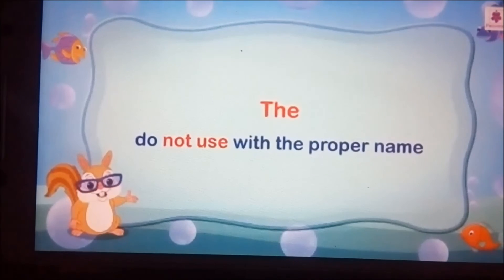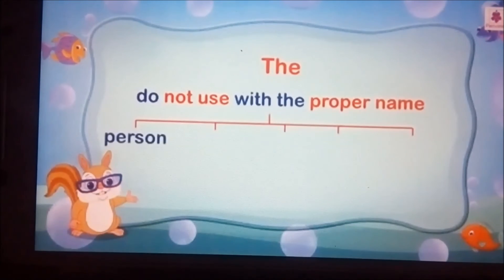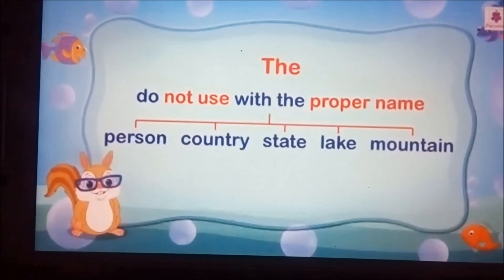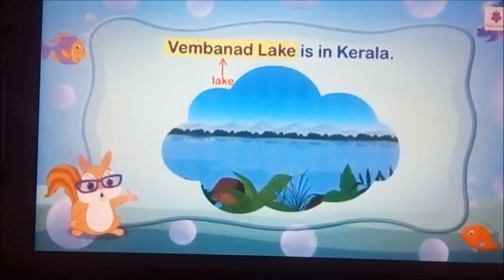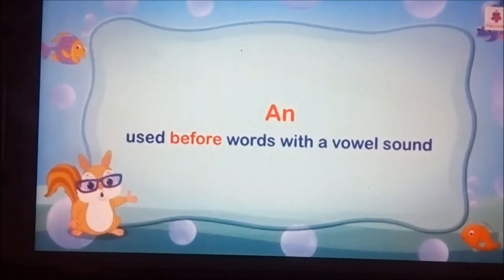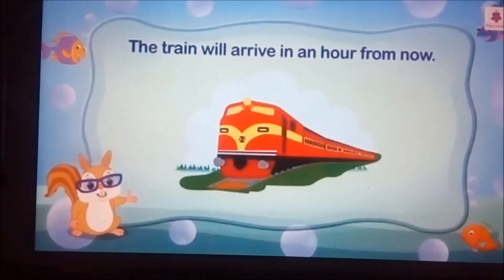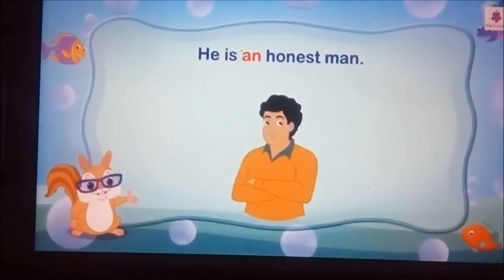We do not use 'the' with the proper name of a person, country, state, lake, or a mountain. For example, Vembanad Lake is in Kerala. We use 'an' before words with a vowel sound. For example, 'The train will arrive in an hour from now.' 'He is an honest man.'